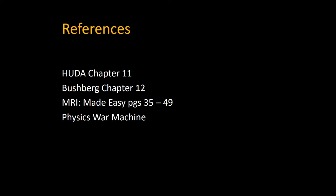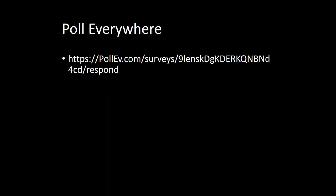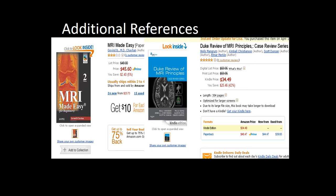Here are some suggested references. Huda Chapter 11 covers MRI. Bushberg Chapter 12. There's a book called MRI Made Easy which has been popular with a lot of residents. Physics War Machine has a very basic MRI section which is good as well. MRI is very complex — probably more complex physics-wise than a lot of other concepts within diagnostic radiology. I'd encourage you to check out whatever resource you learn best from.